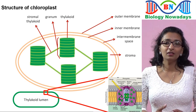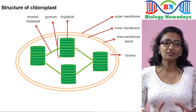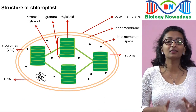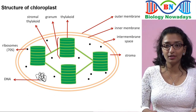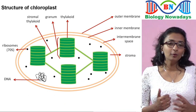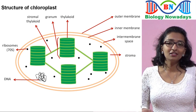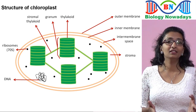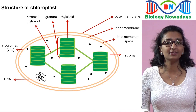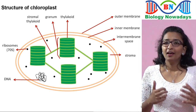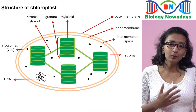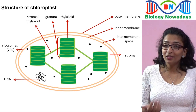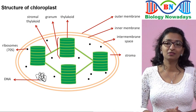In the stroma, you can also see strands of DNA and prokaryotic-like ribosomes — that is, 70S ribosomes. Chloroplasts are cell organelles, and normally we don't expect DNA to be present in a cell organelle. Have you ever wondered why chloroplasts have their own DNA and prokaryotic 70S ribosomes?